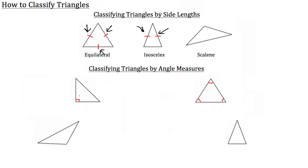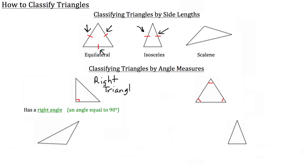The first triangle on the top left is a right triangle. We call it a right triangle because it has a right angle — an angle equal to 90 degrees — and you can see that here denoted by the red box in the corner.